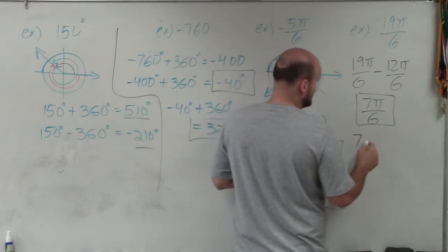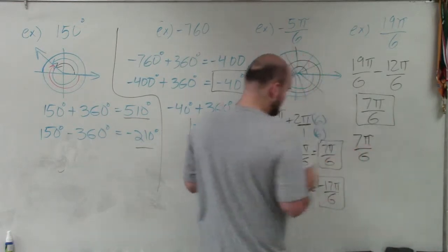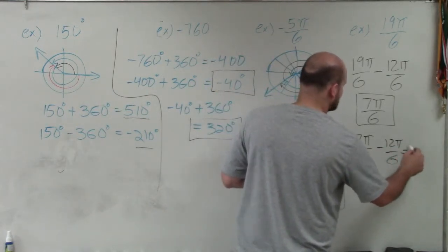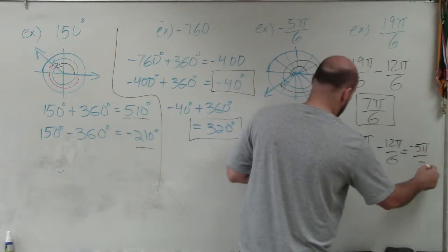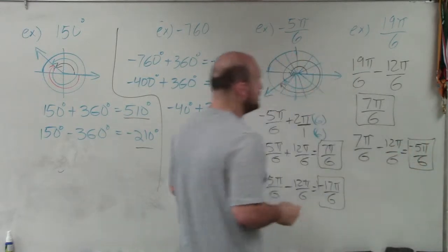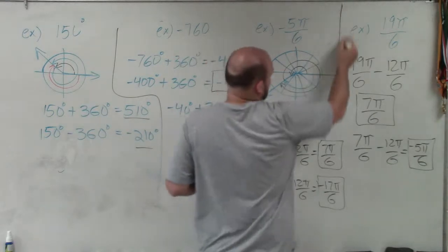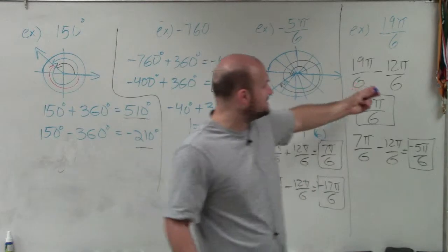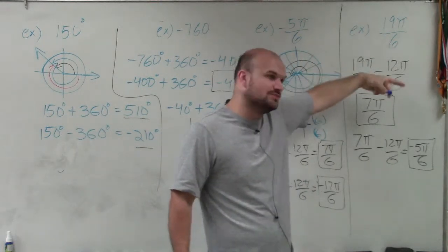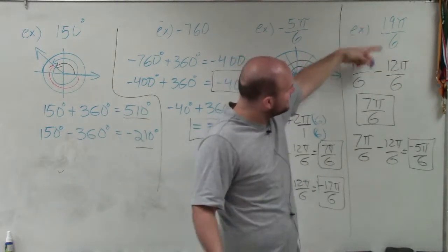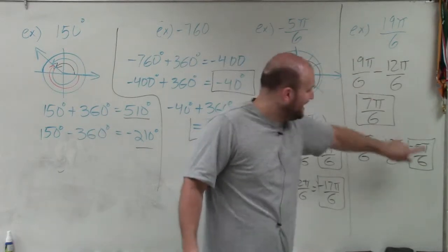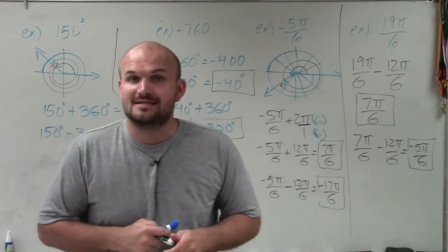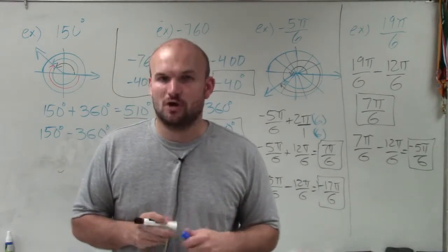To find the negative angle, I take 7 pi over 6 and subtract 12 pi over 6 again, and I get negative 5 pi over 6. So in this example, I just had to keep subtracting 2 pi — I didn't have to both add and subtract — to get a positive angle between 0 and 2 pi and a negative angle between 0 and 2 pi. And there you go, ladies and gentlemen — that is how you add and subtract to determine coterminal angles. Thanks.